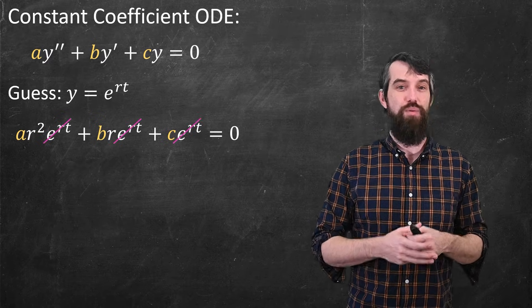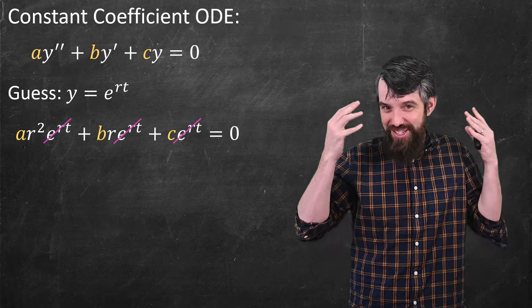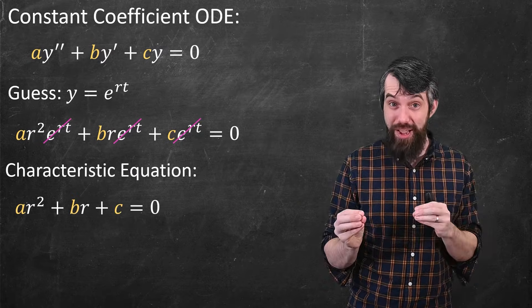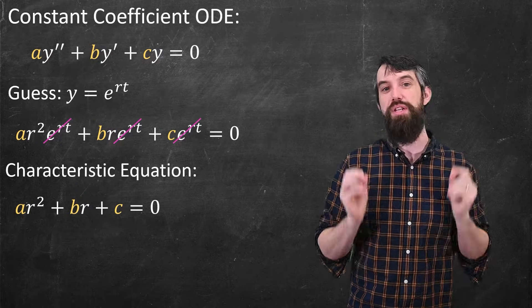I cancel the e to the rt's, which you could do immediately after the first few tries, the e to the rt's always cancel. That leaves me with the so-called characteristic equation, a polynomial: ar squared plus br plus c equals zero.